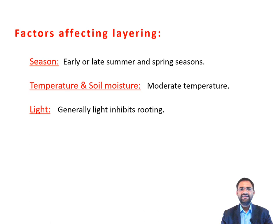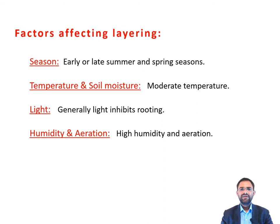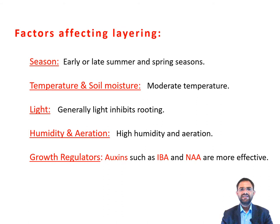The next factor is light. Light has a determinative role in adventitious root formation. Although in general light inhibits rooting, it affects rooting by virtue of its intensity, quality and duration. The next factor is humidity and aeration. High humidity and aeration of the soil, as well as humidity in the air, promote root formation on layers. The next one is growth regulators. Growth regulatory substances such as auxin stimulate the formation of roots on layers. IBA and NAA are the most effective hormones or growth regulators mainly known for rooting on layers.